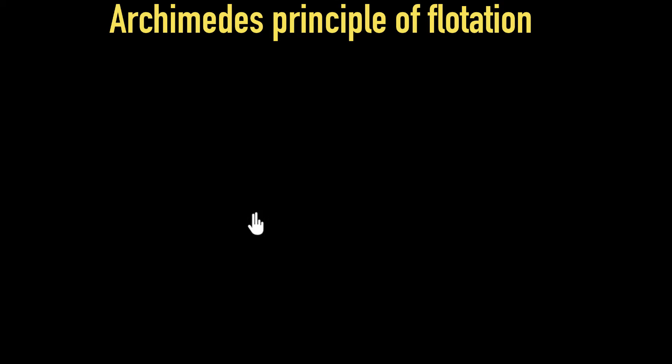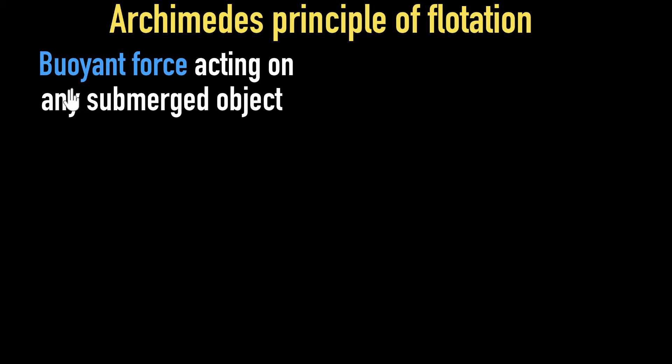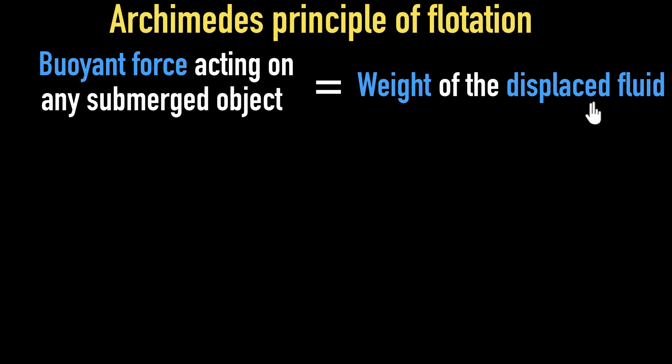Whatever he found out is today famously called Archimedes principle of flotation. It basically says that the buoyant force acting on any submerged object equals the weight of the displaced fluid. So we'll first try and understand what this statement means, and then we'll see if we can answer our original question. Let's start with the buoyant force. What does that mean?